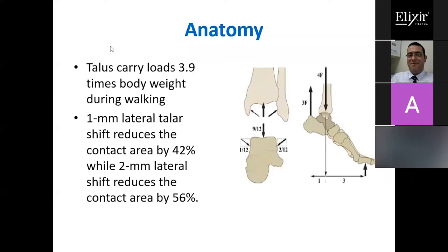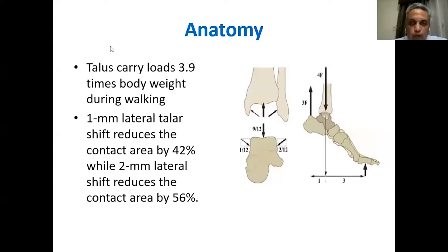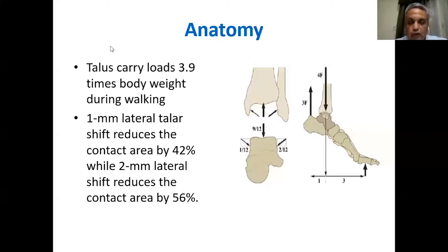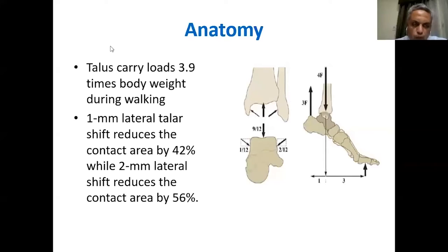The talus carries up to nearly four times the body weight during walking. If you compare the body weight to the small surface area of the cartilage of the talus dome, you can imagine the amount of load concentrated on this articular surface. Because of this high congruency of the joint, if you have a small shift — just one millimeter lateral talar shift — this would reduce the contact area by nearly 42%.